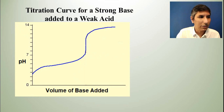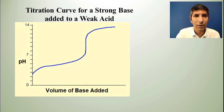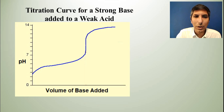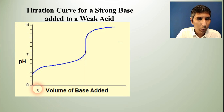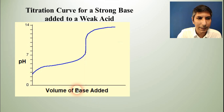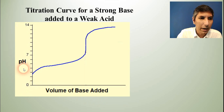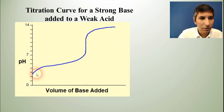Let's start by looking at the titration curve for a strong base added to a weak acid. We have the volume of base that's been added on the x-axis, and the change in pH is represented on the y-axis.